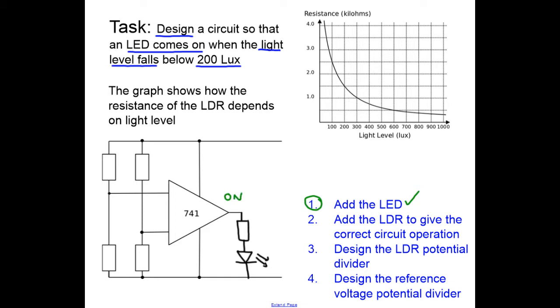I'm going to choose to put the LDR in this position, which means that when it gets dark its resistance will go up, and because it's at the bottom of the potential divider, the voltage at this point will go up, which means the voltage at this point will go up. We should know that for a comparator circuit, it's the non-inverting input which needs to go up to turn the output on.